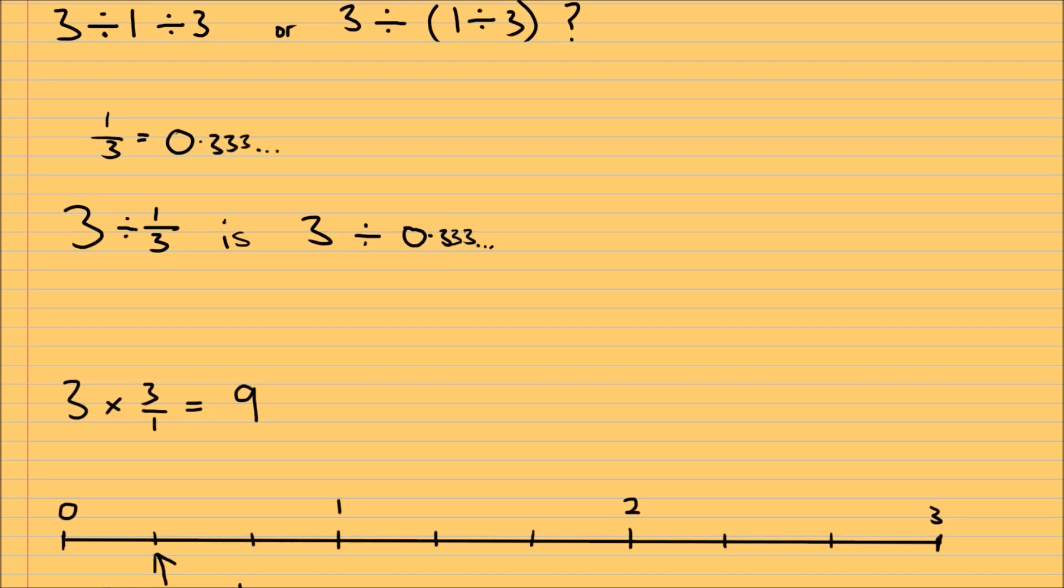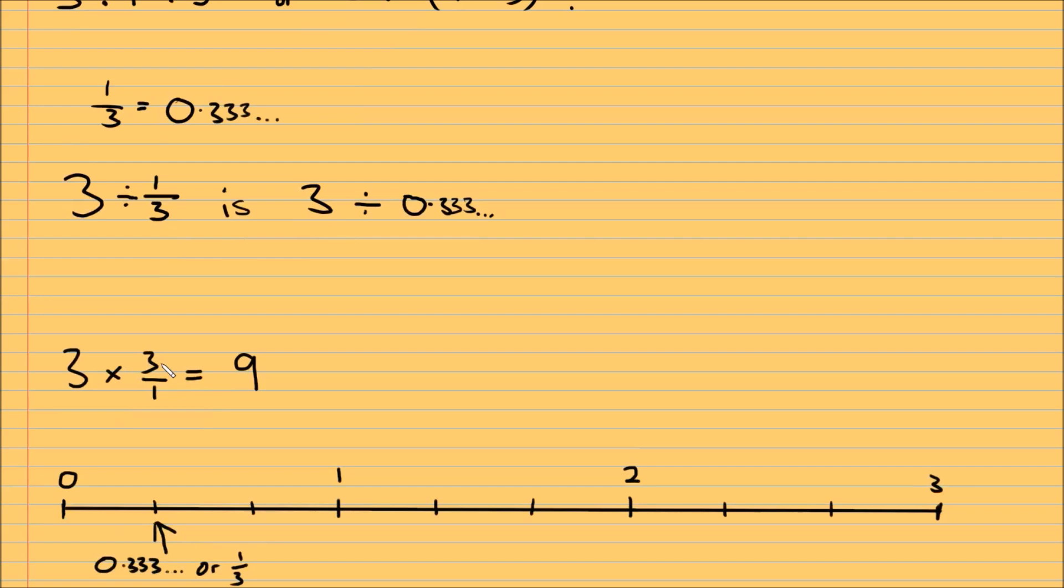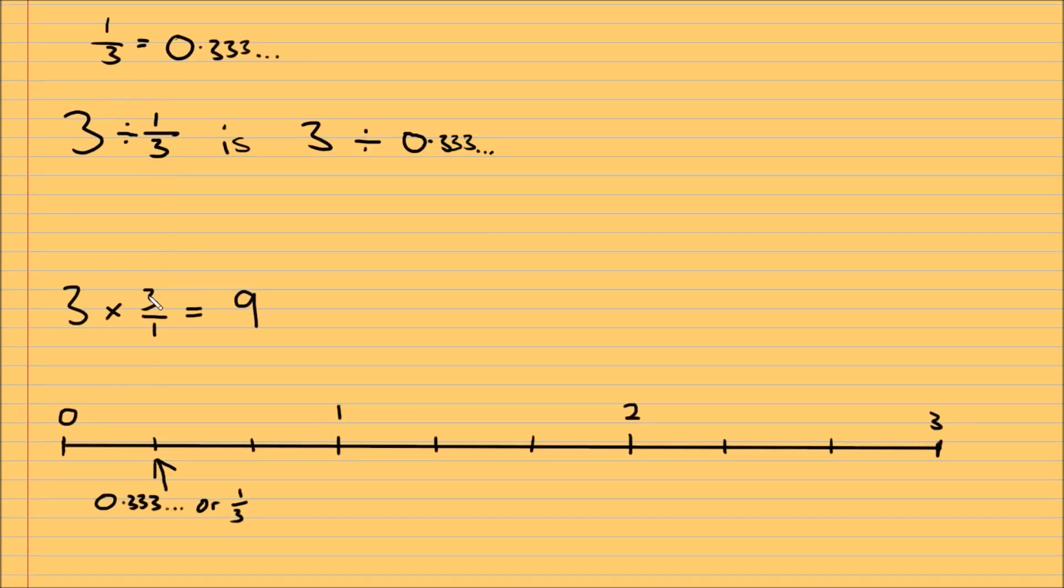And there are a million ways to work this out. When you were young, at school you learned to divide by fractions. You simply turn the fraction upside down and multiply. So this is what we've done here. A third becomes 3 over 1, and this divide becomes multiply. So 3 over 1 is just 3, because 3 divided by 1 is 3, and 3 times 3 is 9.